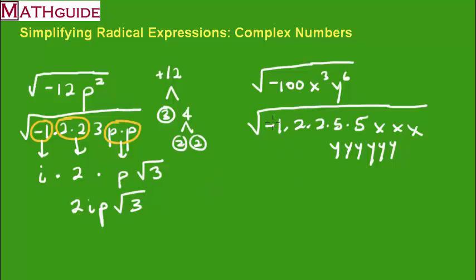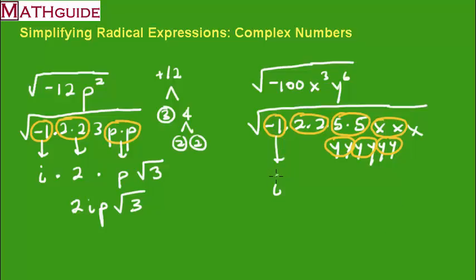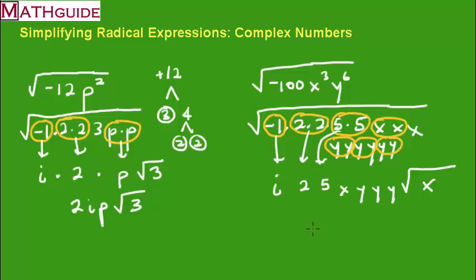Taking the square root of negative 1 gives i. The square root of 4 (the pair of 2's) is 2. The square root of 25 (the pair of 5's) is 5. We circle pairs because we can take the square root of a product pair. The square root of x squared is x. The square root of each y squared gives y, and we get three y's from six y's, which is y³. What's left underneath the radical is just x. So the final answer is 10iy³√x.